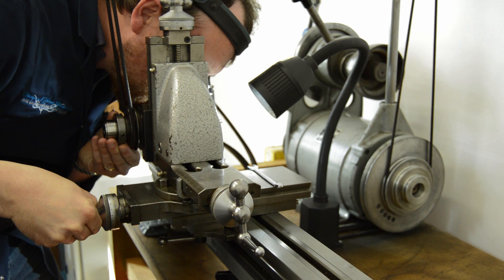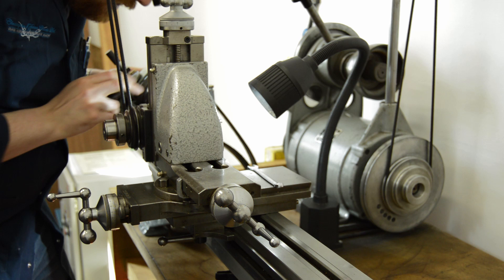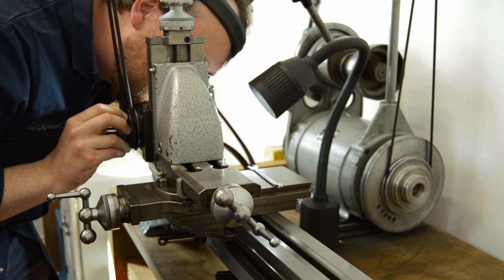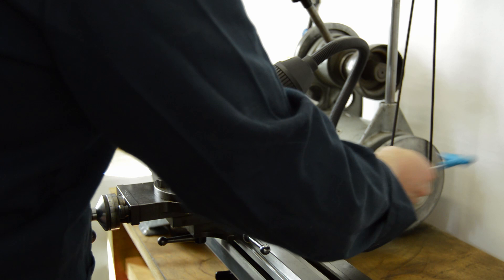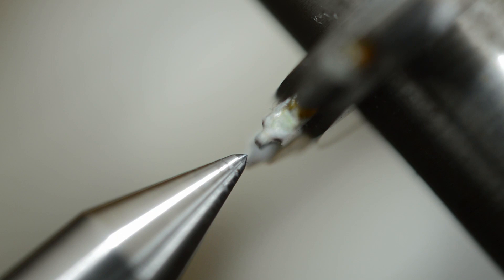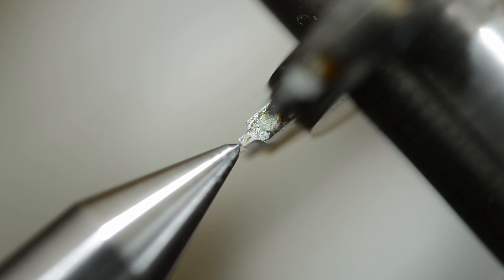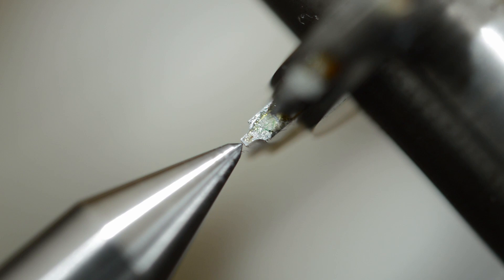I usually just nip up the gib when I'm happy with the centering of the cross slide just so that it can't move. You can see here that the cutter is very well centred to the centre that's in the headstock.